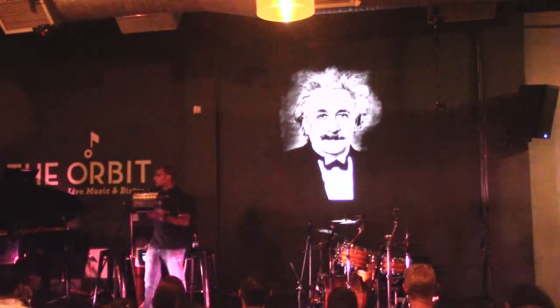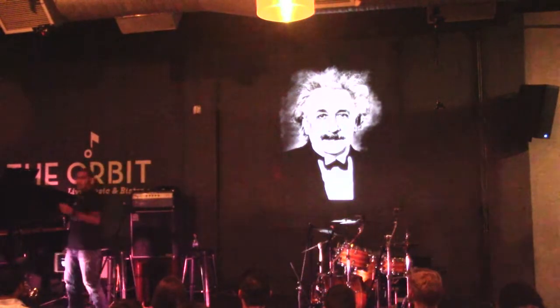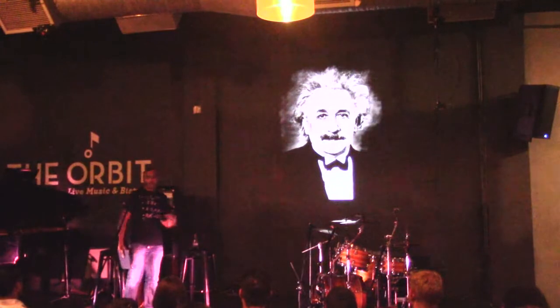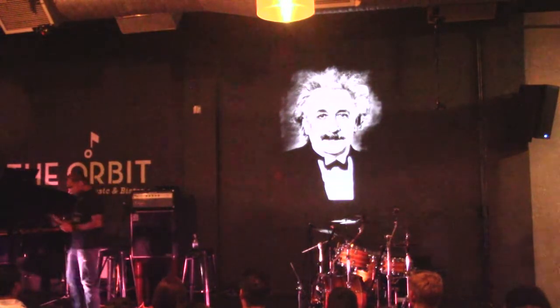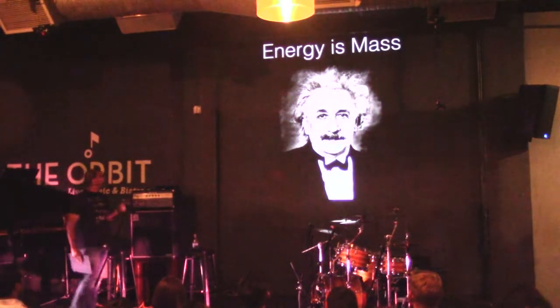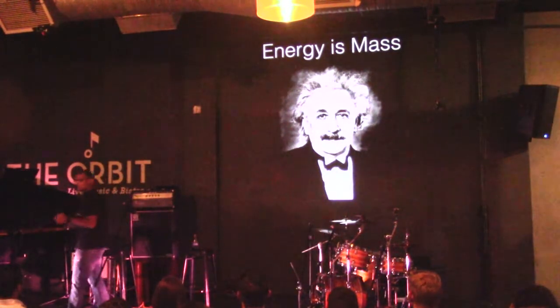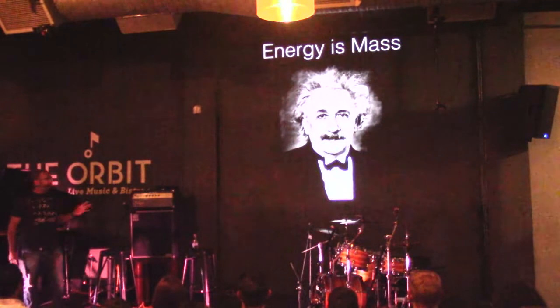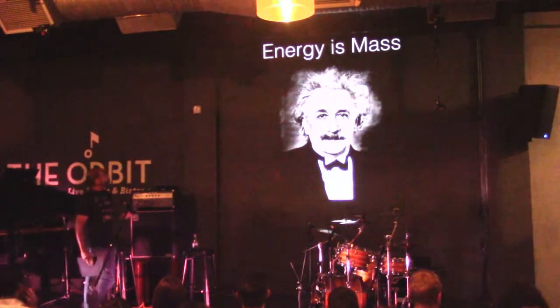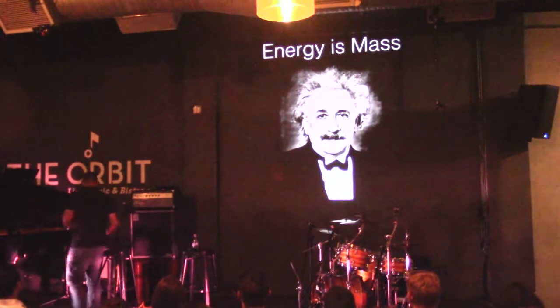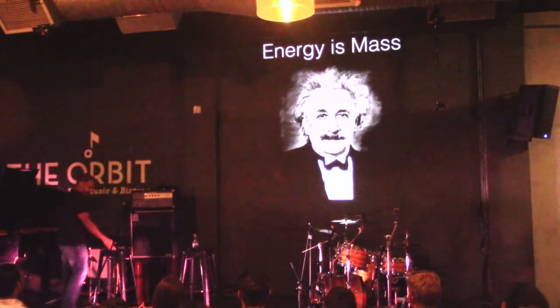E equals MC squared — energy equals mass times the speed of light squared. The important thing about that is that energy is mass. So let's talk about our masses: if energy is mass, how is your mass energy?